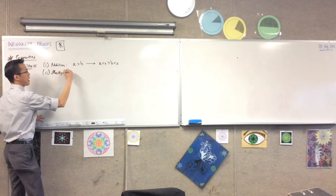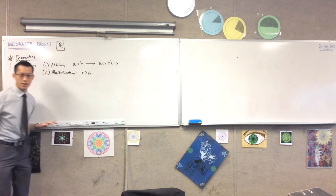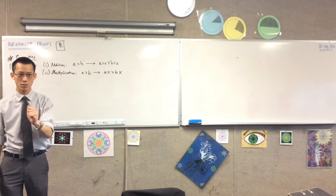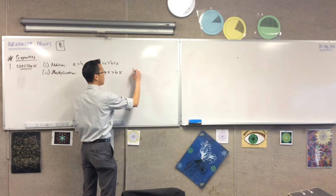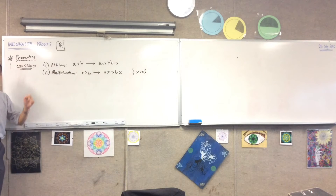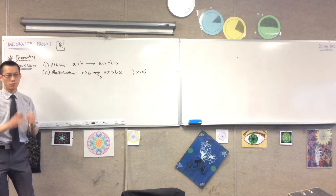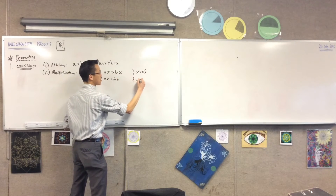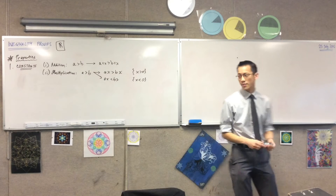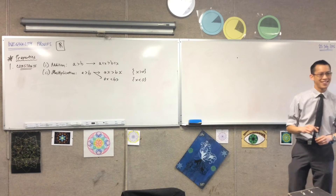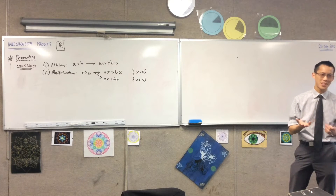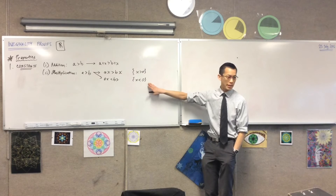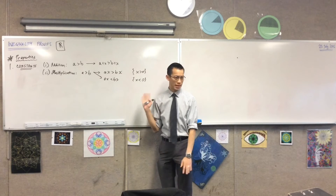In much the same way, just like in the equation world, you can do multiplication by a constant. If A is greater than B, then AX is greater than BX — but only where X is positive. If X is negative, you turn the inequality around. This is the first place we discover that you're not in Kansas anymore — inequalities have some things that make them different from equations.